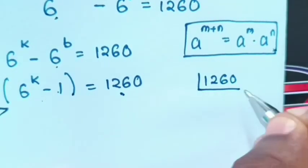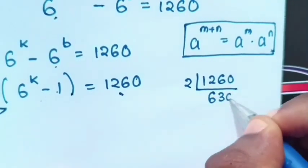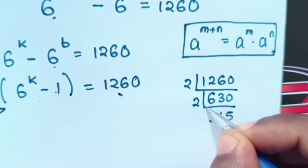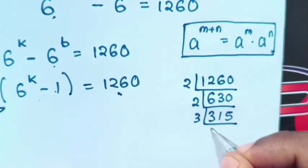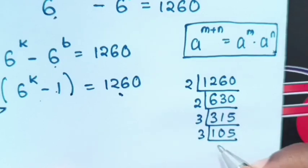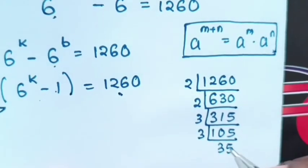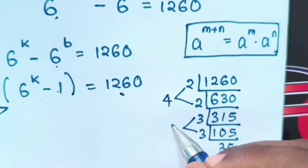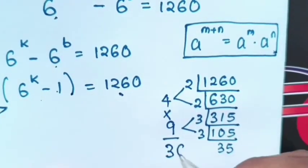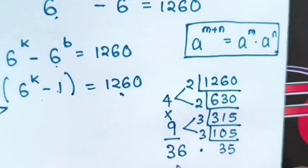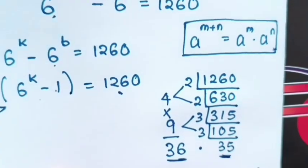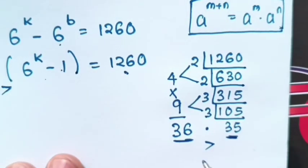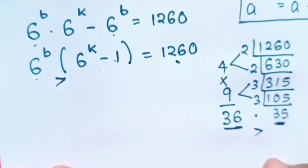Factors of this is 2. By 2 here is 630. By 2 again here is 315. By 3 here is 105. By 3 again here is 35. Then, 2 times 2 is 4, 3 times 3 is 9, 4 times 9 is 36. So, you can see here is 36 times 35, which the difference is 1. So, 36 is greater than 35 by 1.